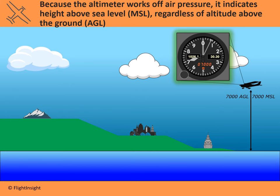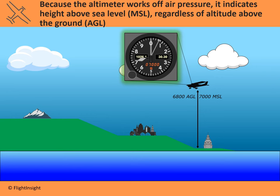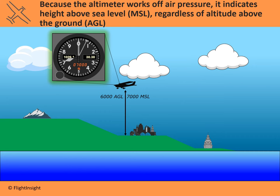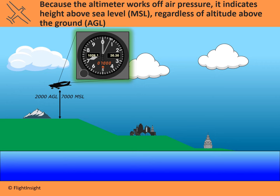Over the ocean or the Chesapeake Bay as we approach Annapolis, our AGL and MSL altitudes are going to be the same — the indicated altitude of 7,000 feet above sea level is also 7,000 feet above ground level. But flying inland as the terrain elevation starts to creep up, the altimeter doesn't change its indication. Over Kansas City at a ground elevation of 1,000 feet, you're getting closer to the ground but the altimeter doesn't change — and you can see where that becomes a problem in mountainous areas like the Rockies.